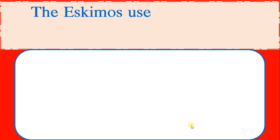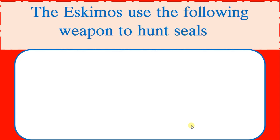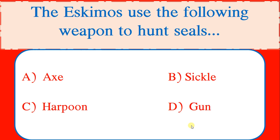The Eskimos use the following weapon to hunt seals. Options: Axe, sickle, harpoon, gun. Correct answer: Harpoon.